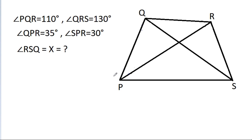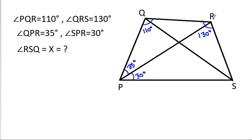In this video, we have given that angle PQR is 110 degrees, angle QRS is 130 degrees, angle QPR is 35 degrees, angle SPR is 30 degrees, and angle RSQ is X. We have to find the value of X.